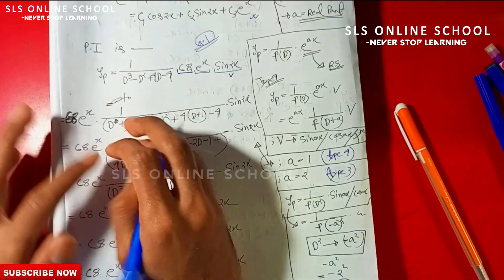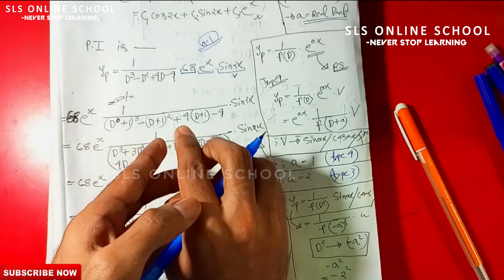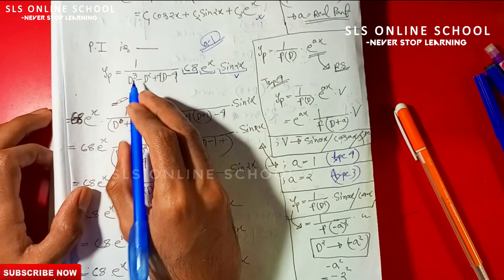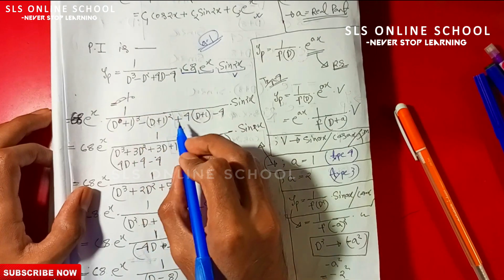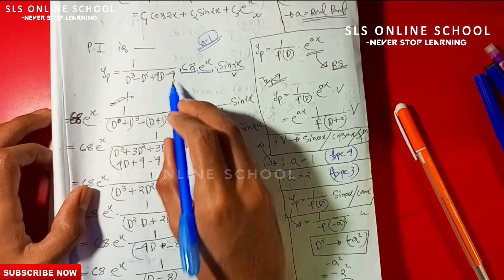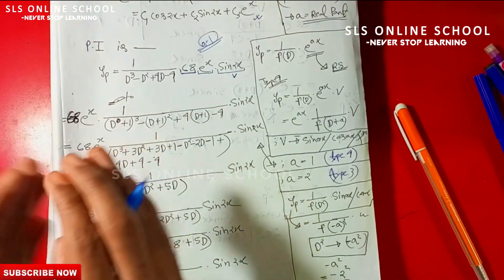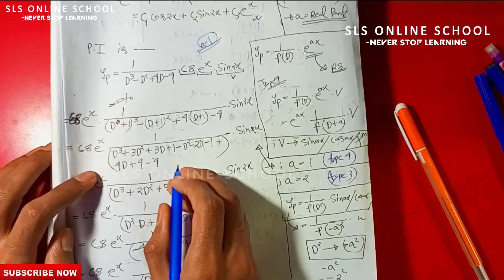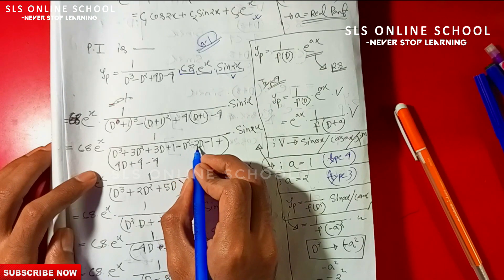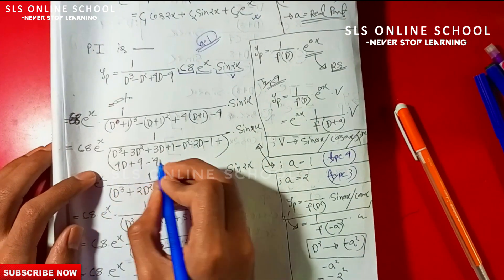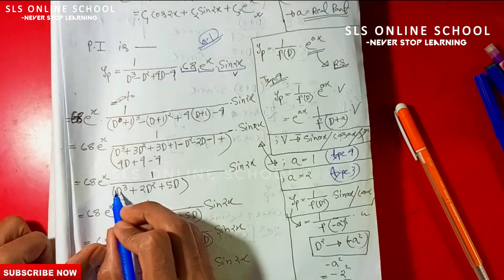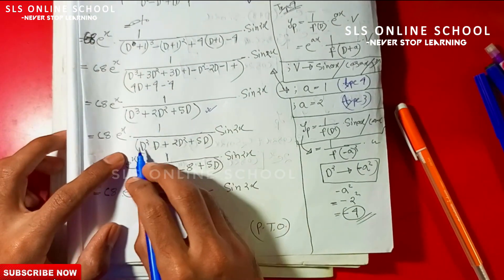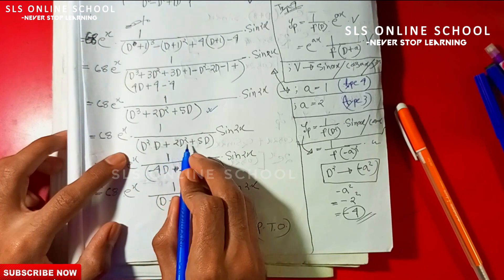Replacing D by D+1, we expand the denominator: (D+1)³ minus (D+1)² plus 4(D+1) minus 4. Expanding: D-cube plus 3D-square plus 3D plus 1, minus D-square minus 2D minus 1, plus 4D plus 4, minus 4. Combining terms gives D-cube plus 2D-square plus 5D. So the particular integral becomes 68 e to the power x times 1 by D(D-square plus 2D plus 5) acting on sine 2x.